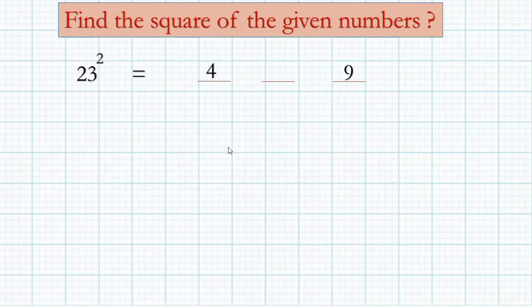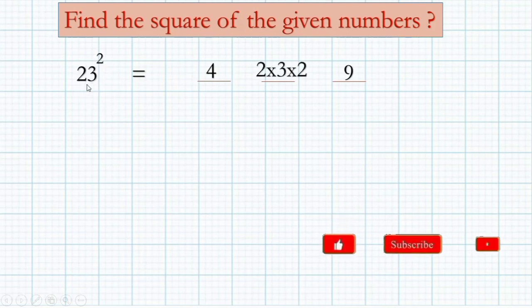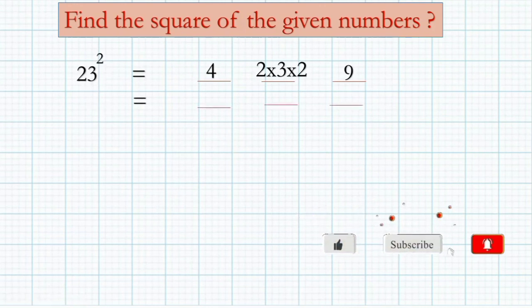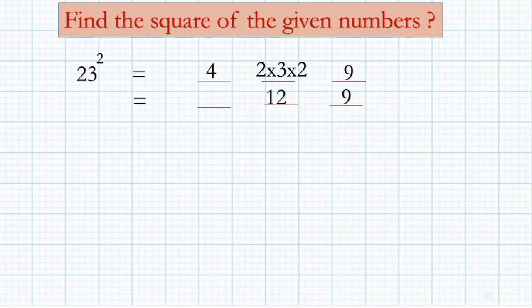In the middle, you have to multiply every number in the question. Here 2, 3, and 2 are the numbers in the question, so two into three into two you should write in the middle. That gives nine in the last, and two into three into two is 12 in the middle, and four in the first dash.